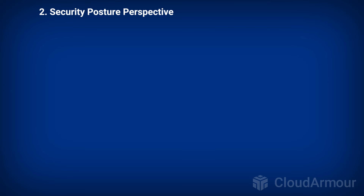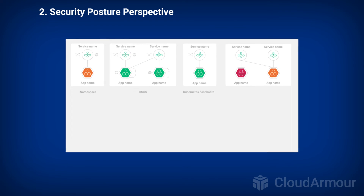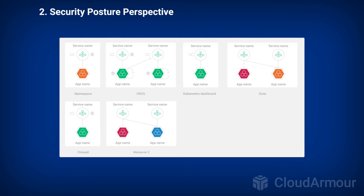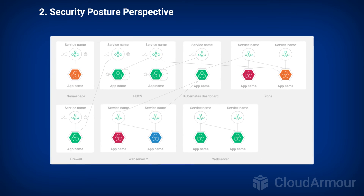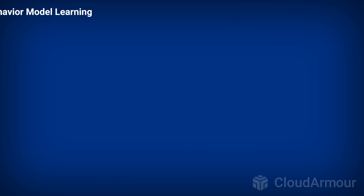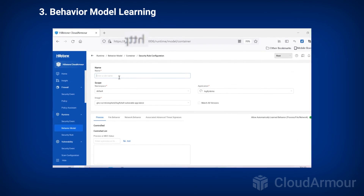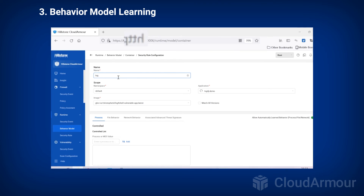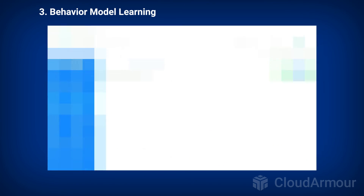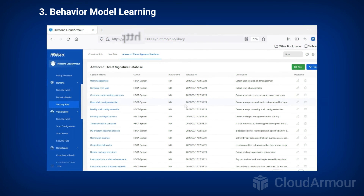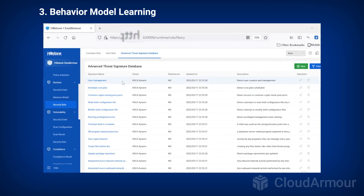Security Posture Perspective provides deep insight into vulnerabilities and network flows between applications and services through the full-screen, multi-view dashboard. Behavior Model Learning allows Cloud Armor to build a baseline model of normal behavior via the hosts and containers it monitors. These observations can be converted into rules that improve intrusion detection capabilities and enhance the efficiency of policy configuration.